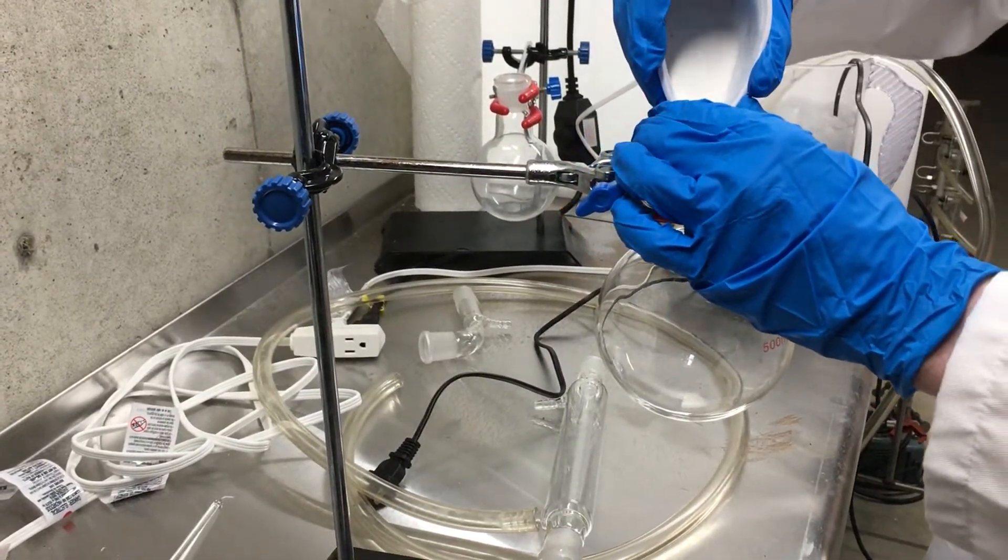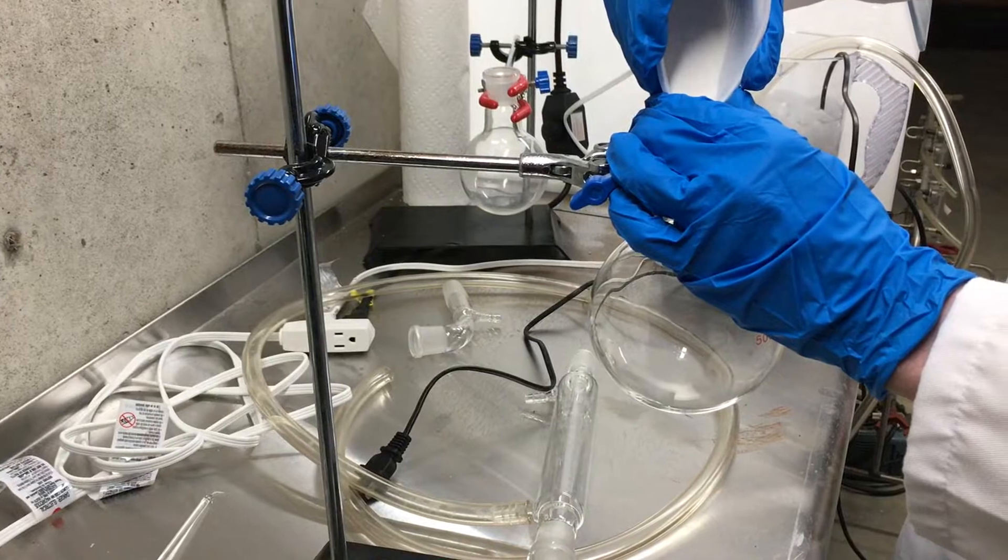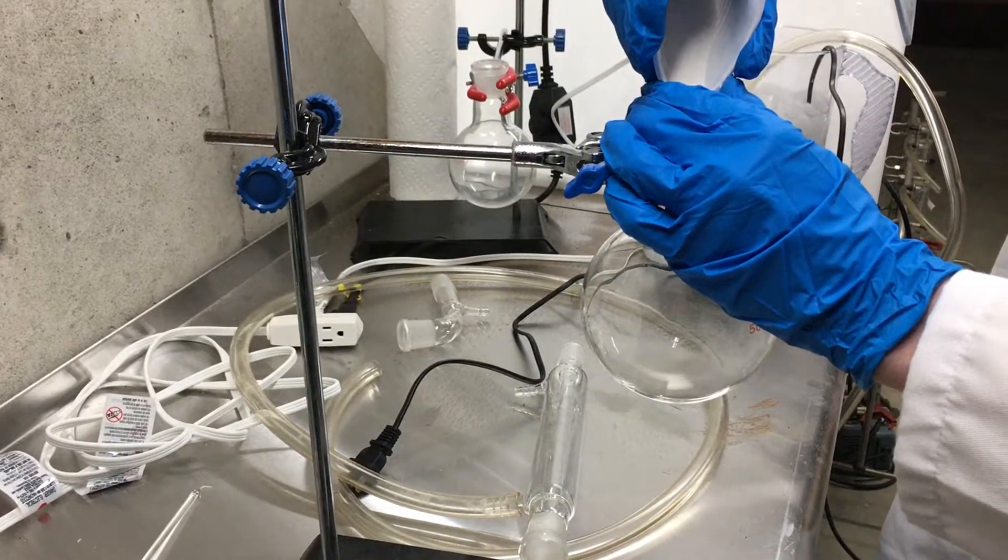Once the potassium nitrate is finally ground up, I add it into a 500 milliliter round bottom flask.